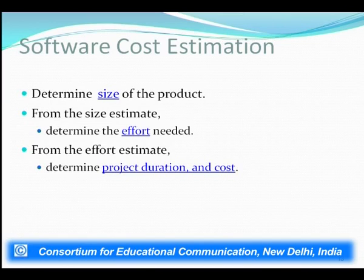Software cost estimation determines the size of the project or product. Size can be estimated only in terms of effort or time duration — not simply number of lines, functions, or features — because the size of the project directly defines the effort needed, determines the project duration, and the overall cost of the project.